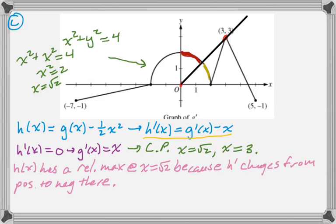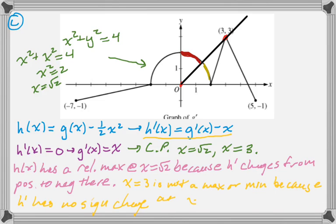Now let's talk about x = 3. Nothing happens at 3 — it's neither a maximum nor a minimum, because there's no sign change. Before x = 3, g prime is less than x, so h prime is negative. Then at 3 it's 0, but after 3 it's negative again, so it doesn't have a sign change.